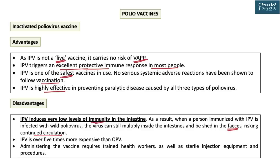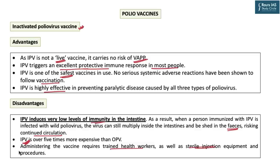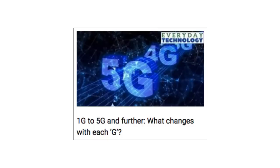IPV is also more expensive than OPV and its administration requires trained health workers and sterile injection equipment. An increasing number of industrialized polio-free countries are using IPV because the risk of paralytic polio associated with continued routine use of OPV is deemed greater than the risk of imported wild virus. If circulating vaccine-derived polio virus is to be avoided, IPV must be used. However, since IPV does not stop transmission of the virus, OPV is used wherever a polio outbreak needs to be contained, even in countries that rely exclusively on IPV for routine immunization. Once polio has been eradicated, use of all OPV will need to be stopped to prevent re-establishment of transmission due to vaccine-derived polio viruses.